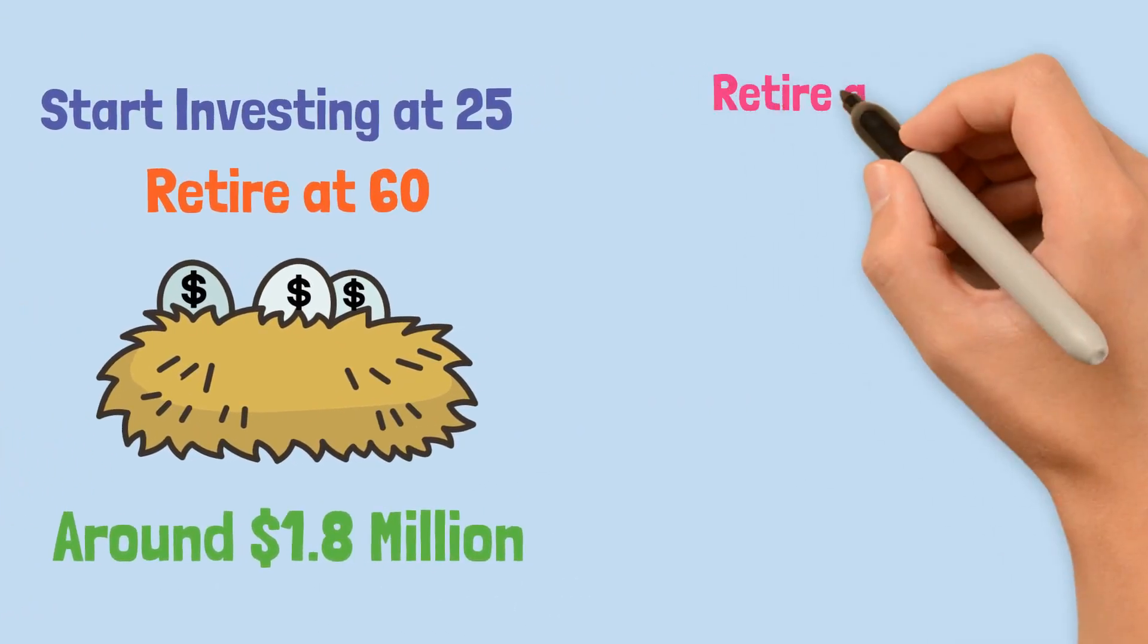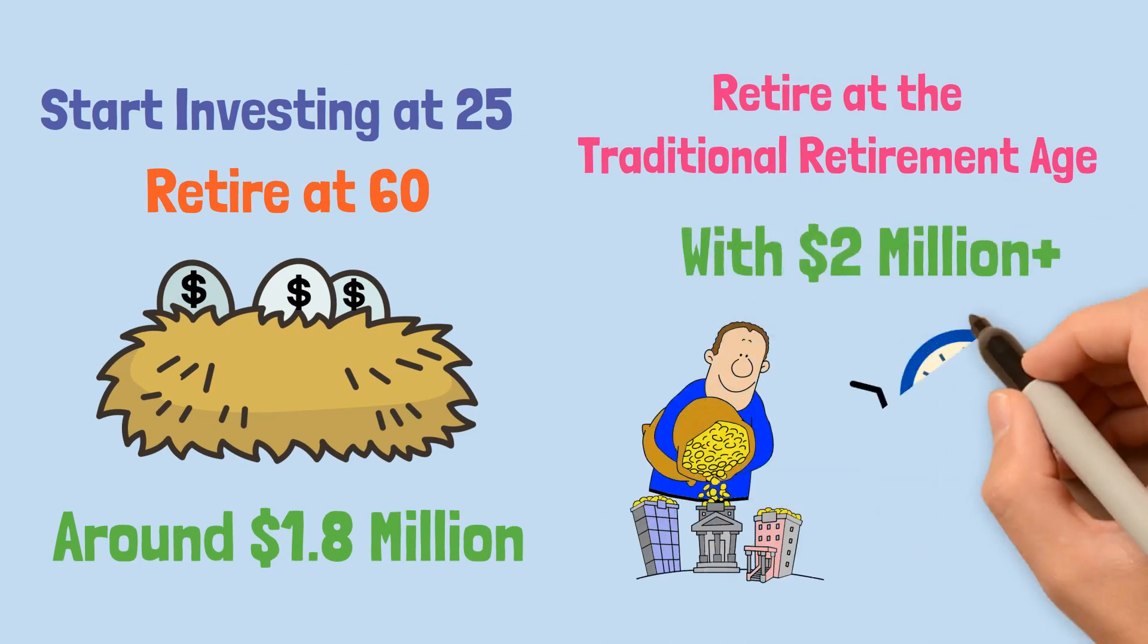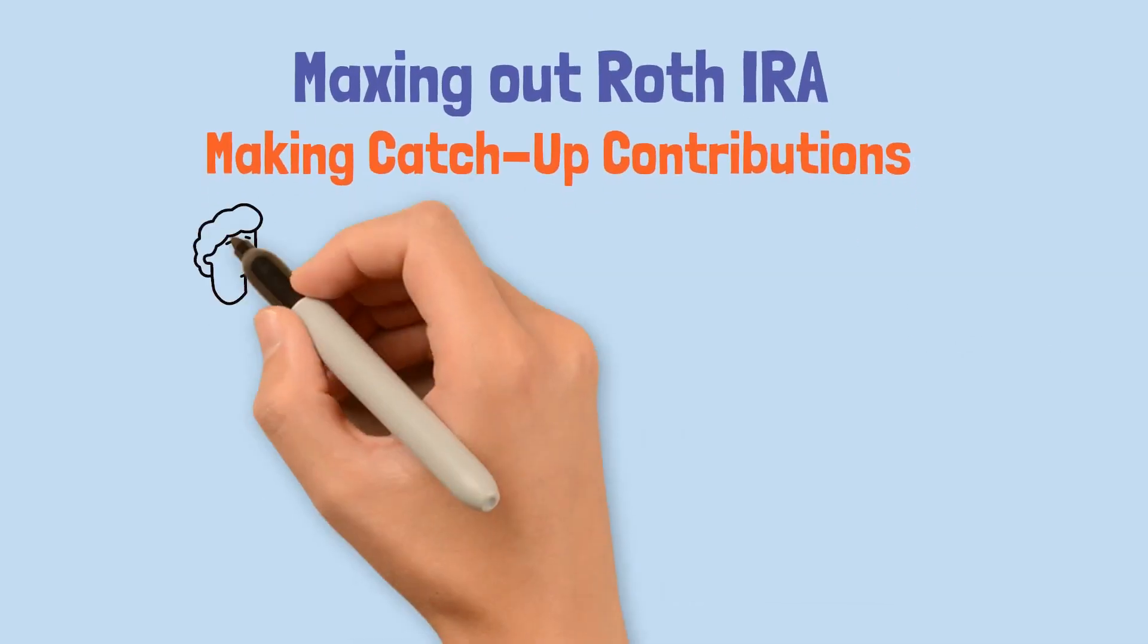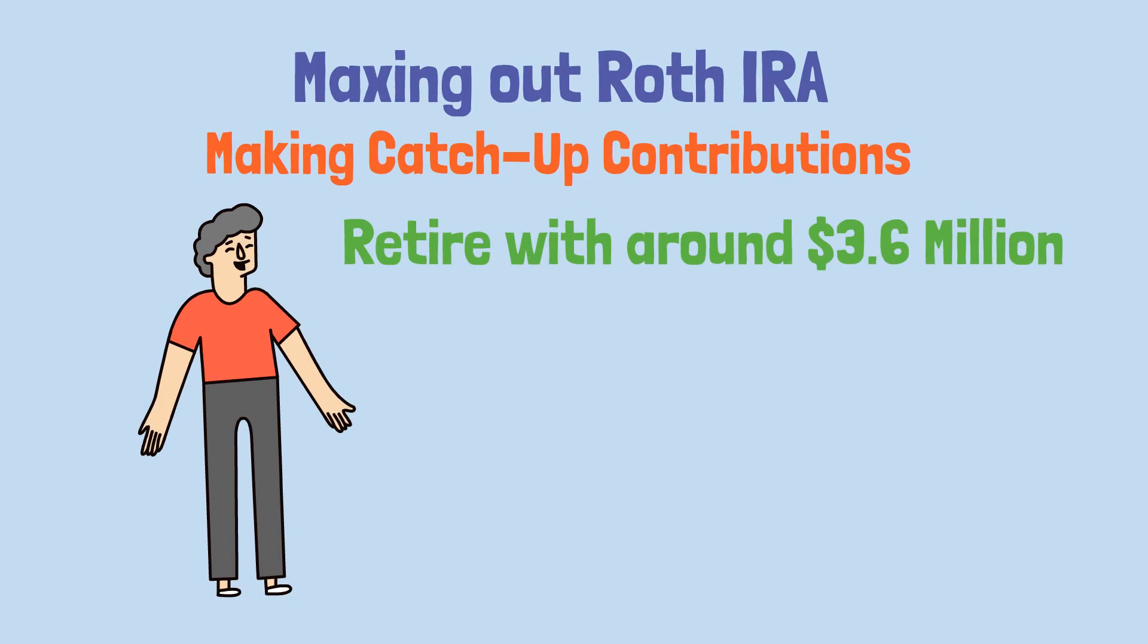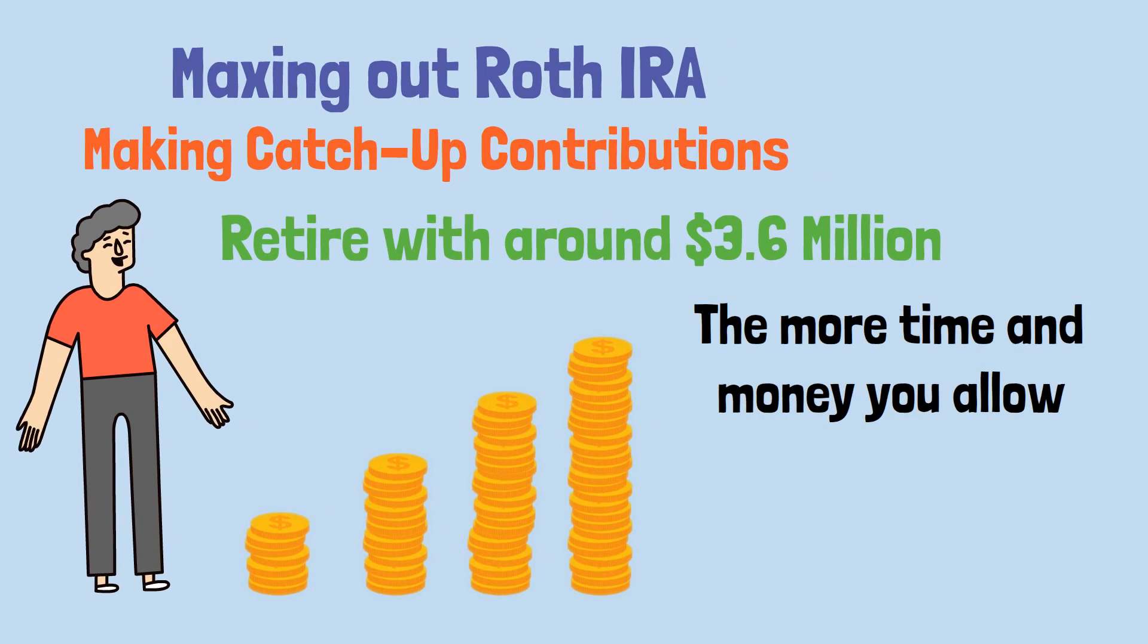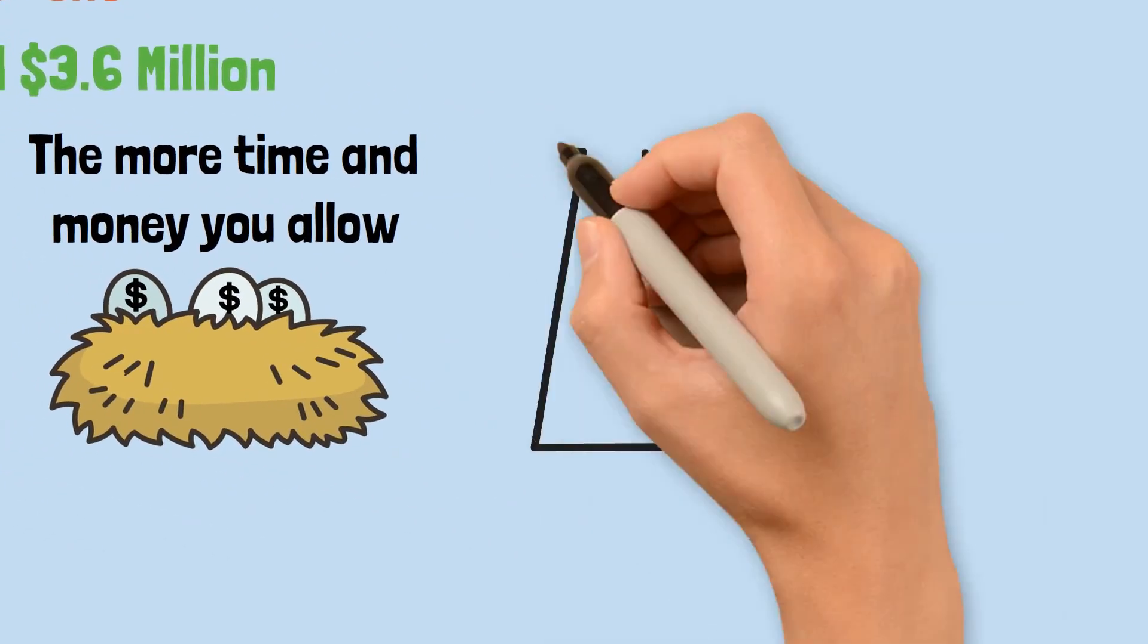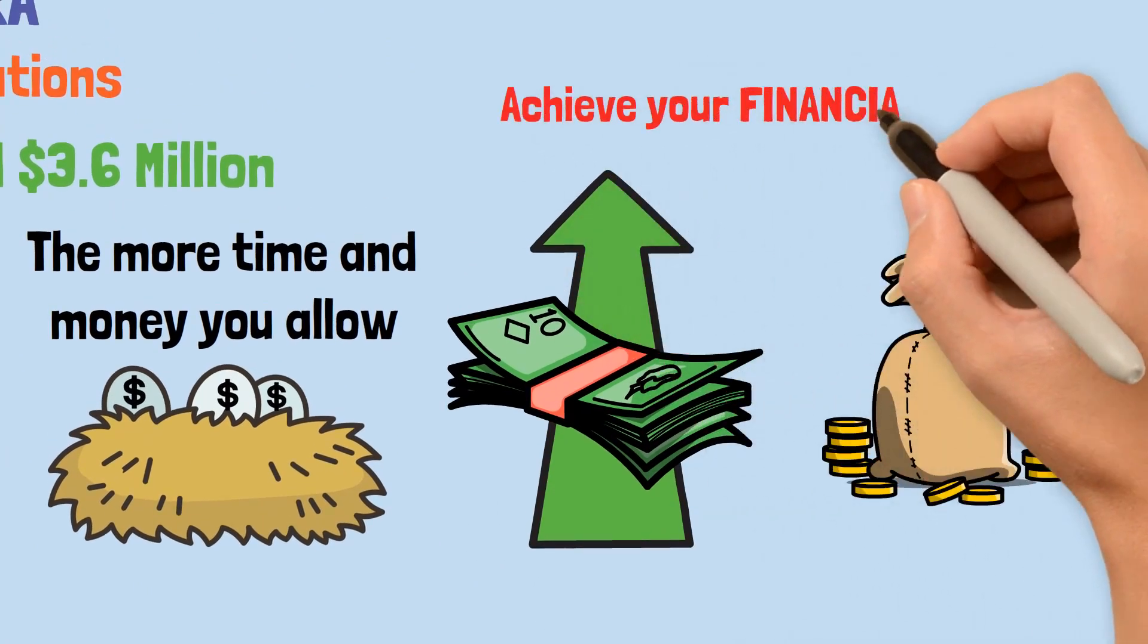On the other hand, if you want to retire at the traditional retirement age but with more than $2 million, you'll need to invest more money since you can't buy more time. By maxing out his Roth IRA every year and making catch-up contributions when he turns 50, Liam could retire with around $3.6 million. The formula for compound interest remains the same: the more time and money you allow, the bigger your nest egg will become. By increasing the amount of money you invest, you'll be able to grow your wealth more quickly and achieve your financial goals.